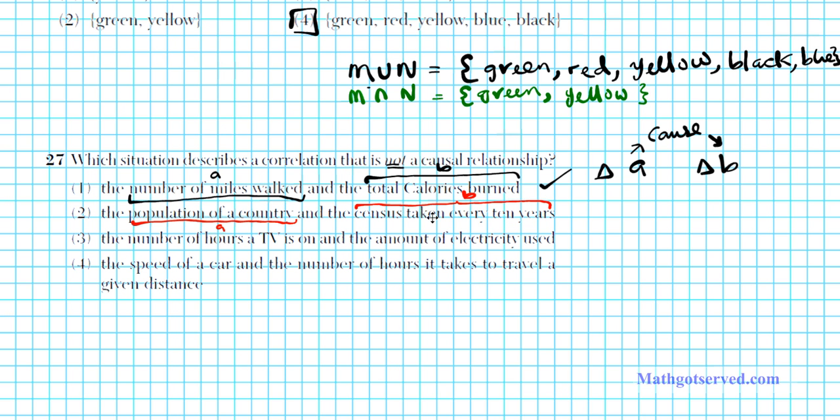The answer is no. Regardless of the variation in population, every 10 years the census is taken. The census is dependent on the calendar. Every 10 years you do the census regardless of the population of a country. So, this is not a causal relationship because the change in population has nothing to do with conducting the census.